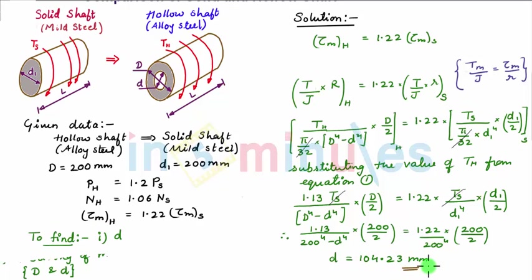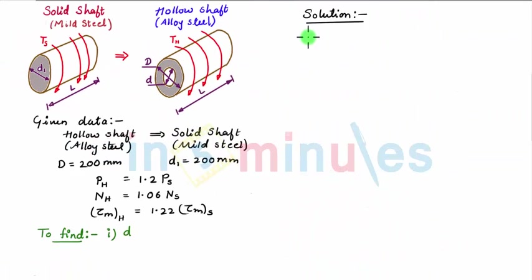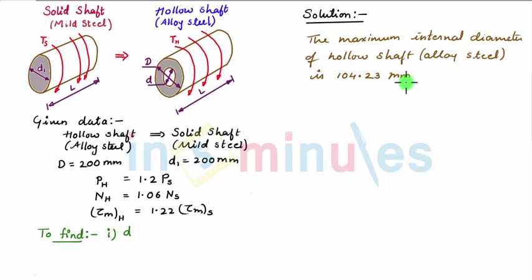So the maximum internal diameter of the hollow shaft made of alloy steel is 104.23 mm. We can also make a comparison of percentage saving in weight and cost of material by replacing the solid shaft with the hollow shaft. Thanks for watching In 5 Minutes.